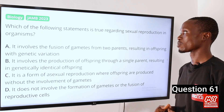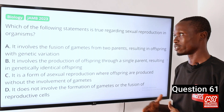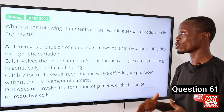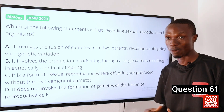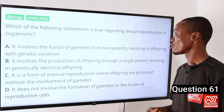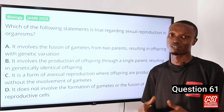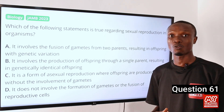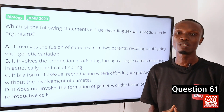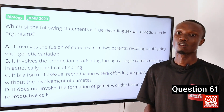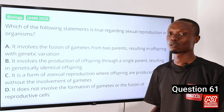This question is about the statement that is true regarding sexual reproduction in organisms. The correct answer is option A: it involves the fusion of gametes from two parents resulting in offspring with genetic variation. Sexual reproduction is defined as the production of haploid gametes, which fuse during fertilization to form a genetically diverse offspring. So that makes option A the correct option.